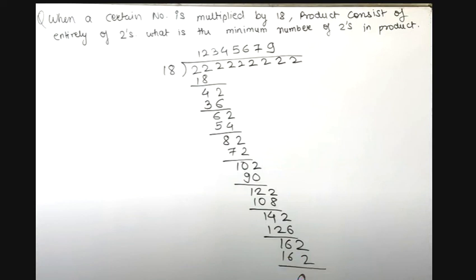So what is the remainder? Minimum number of 2's is 1, 2, 3, 4, 5, 6, 7, 8, 9. So the answer will be 9.